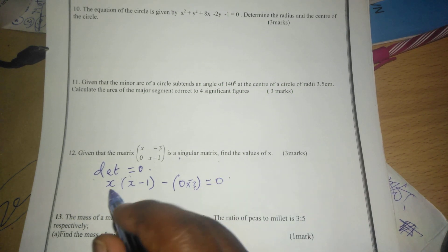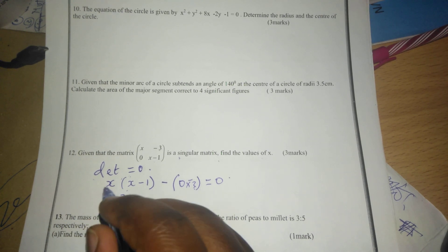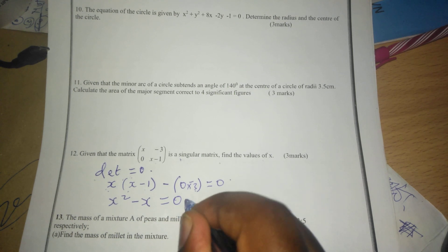So this is already a 0 again. So we can have x squared minus x equals to 0.